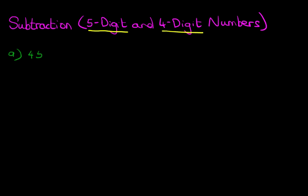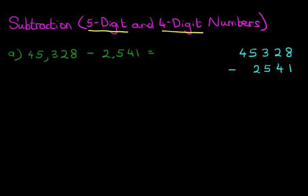What is 45,328 minus 2,541? The first step is we're going to rewrite this question in the vertical format. We've got 45,328 minus 2,541. Let's label the columns: units, tens, hundreds, thousands, and ten thousands.